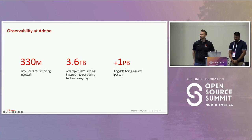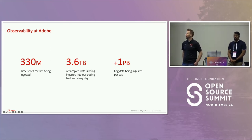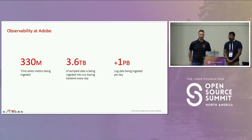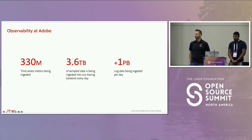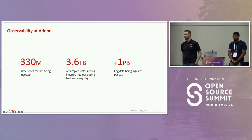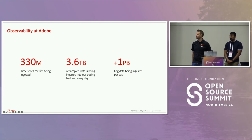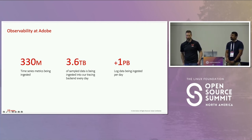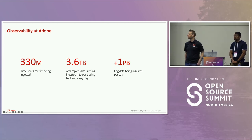I wanted to start by sharing some statistics around observability at Adobe. For metrics, we scrape 330 million unique series every single day, typically at about 30-second intervals. On the span data, we're ingesting 3.6 terabytes every day, with a five-day retention. This is a sampled number. Our peak spans per second is about 150,000 — it goes like a roller coaster depending on weekday or weekend.